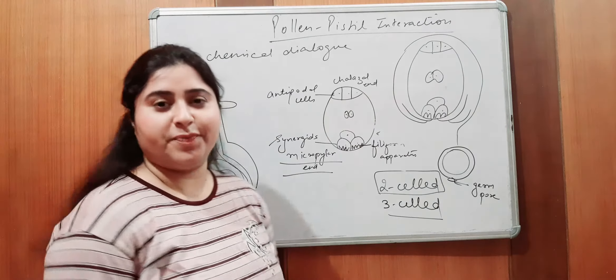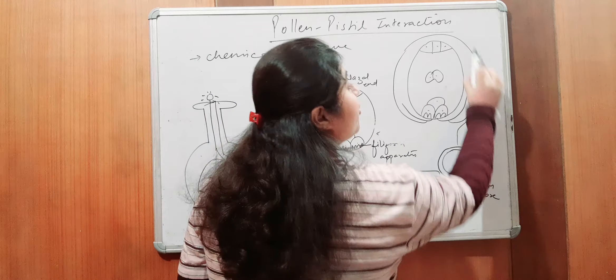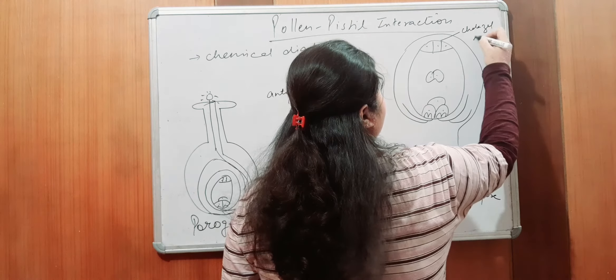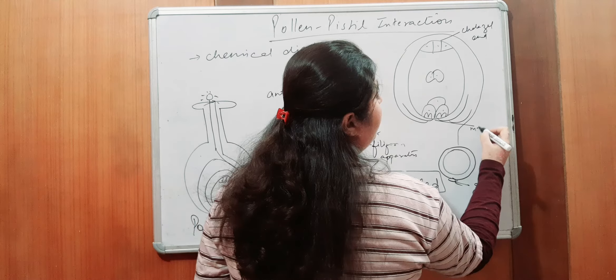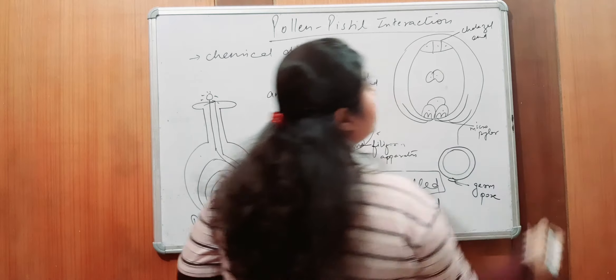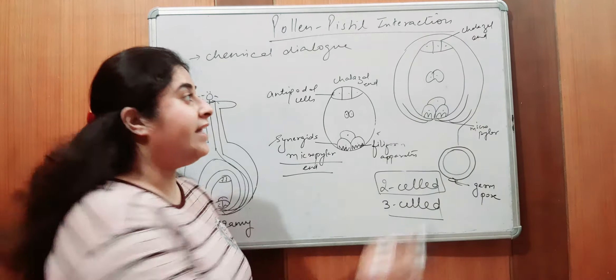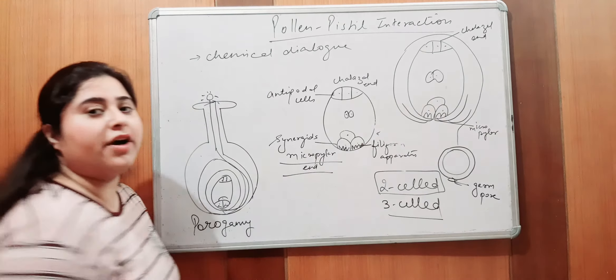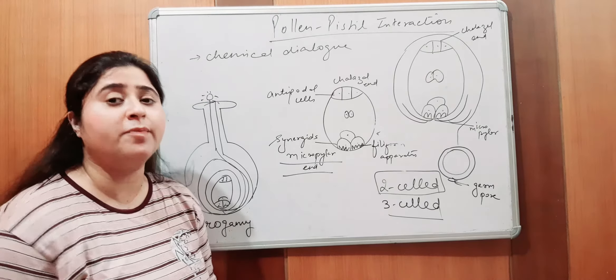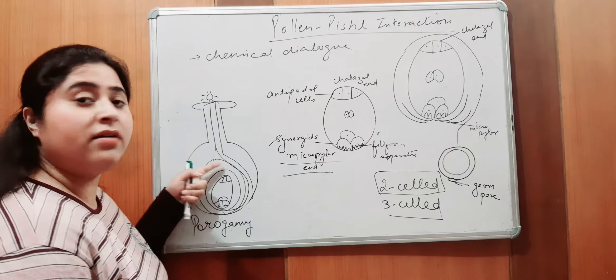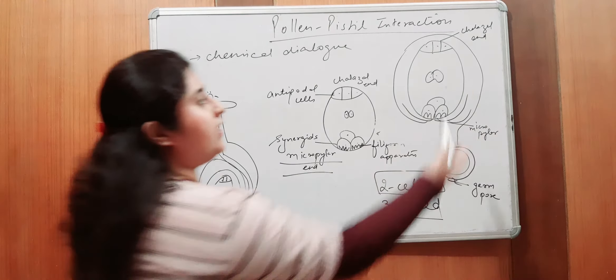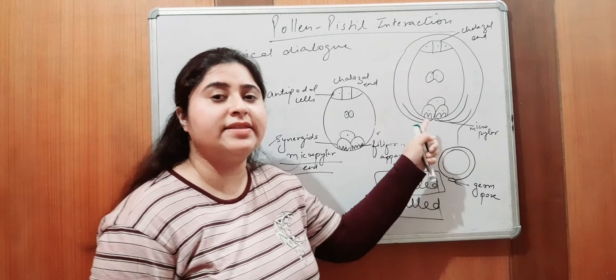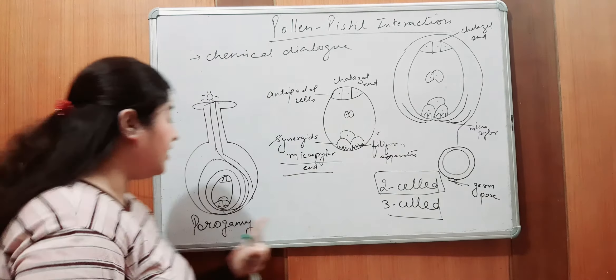Ye ban gaya aapka structure. This is the structure of ovule. Ye hai aapka chalazal end. Ye hai aapka micropylar end. And this structure is present inside the female portion this ovary. This ovary and the portion here I hope it is clear. Pollen tube enter kiya, ye directly enter karke see the micropylar end ke through hi enter kar raha hai inside this. That process is called as porogamy.